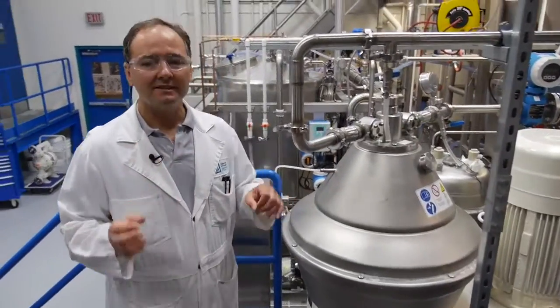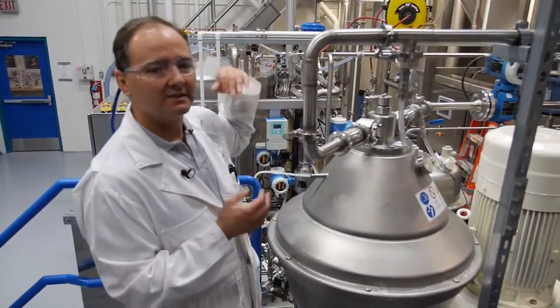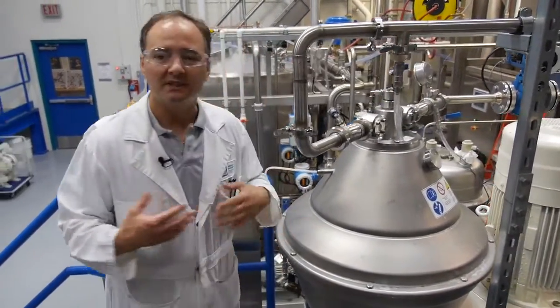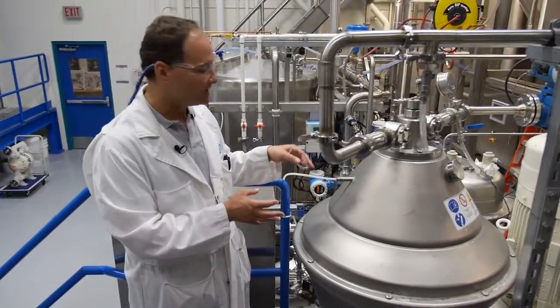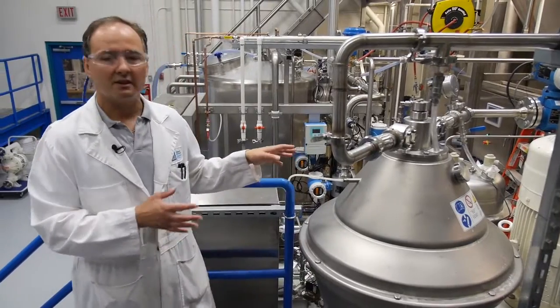After the material has been reacted it gets pumped into a tank, diluted, neutralized, and then we start to separate our material. The first step of that separation or purification is using a 6500 rpm centrifuge.